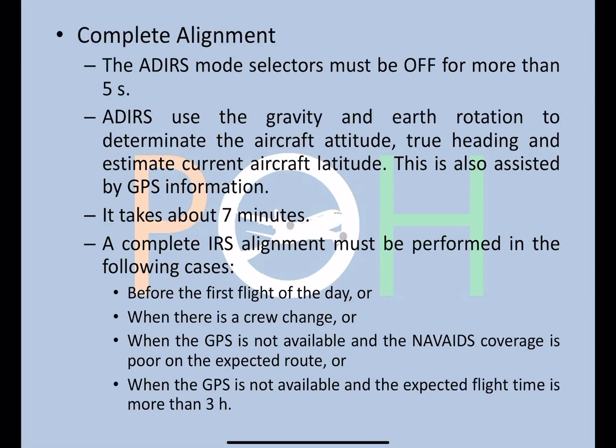Complete alignment, on the other hand, is a full alignment of the ADIRS in which the mode selectors must be off for more than five seconds before being put to NAV. The ADIRS uses gravity and Earth's rotation to determine aircraft attitude, true heading, and estimated current aircraft latitude. This is nowadays primarily assisted by GPS information, and it takes around seven minutes.